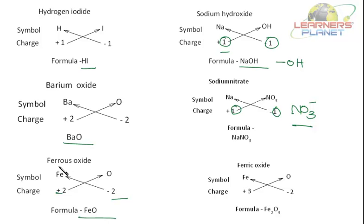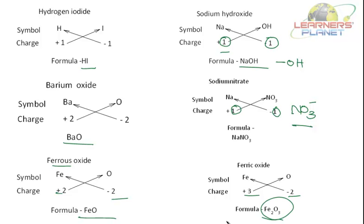For ferric oxide, remember that ferrous iron has a lower valency while ferric has a higher valency. In the case of ferric iron, the charge is plus 3 and oxygen is minus 2. These are cross-placed and we get ferric oxide, Fe2O3.